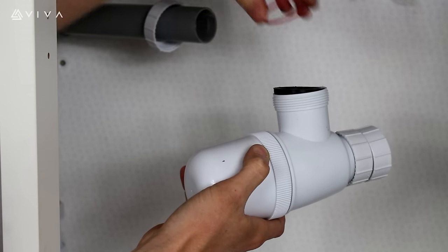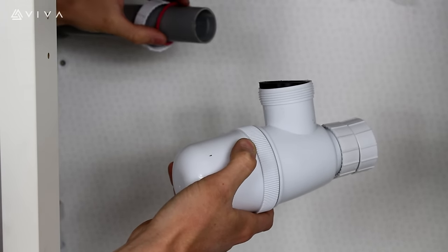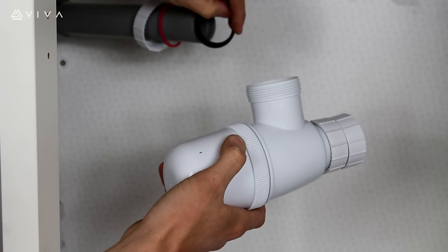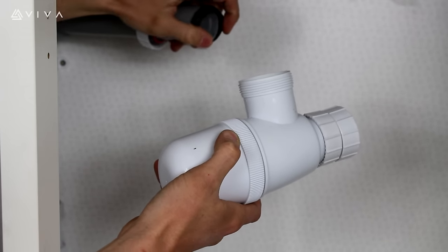Followed by the plastic washer and the conical rubber washer, ensuring the chamfered edge faces the trap outlet.